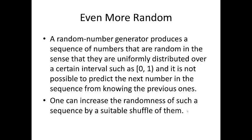Random number generator produces a sequence of numbers that are random in the sense that they are uniformly distributed over a certain interval such as 0, 1. It is not possible to predict the next number in the sequence from knowing the previous ones. One can increase randomness of such a sequence by adding a suitable shuffle to them.